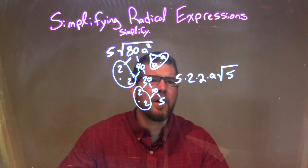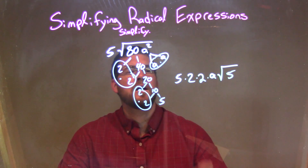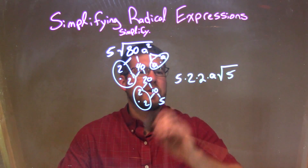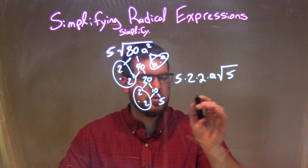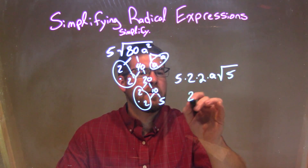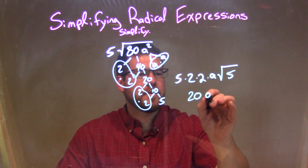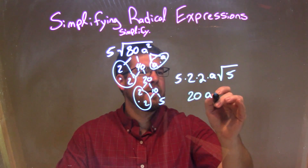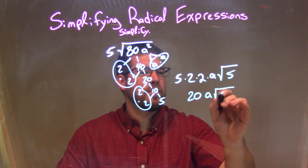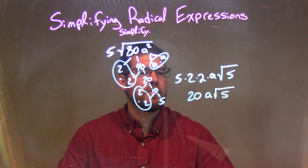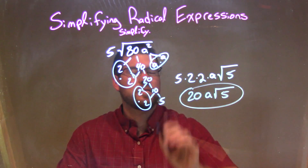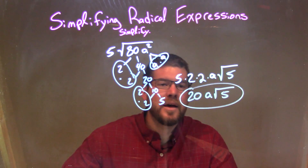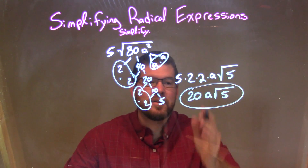So now let's simplify. 5 times 2 times 2 — well, 5 times 2 is 10, and times 2 is 20. So we have 20a times the square root of 5, and there we go. Pretty easy to simplify at that point, and that is our final answer.